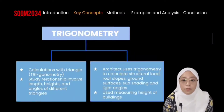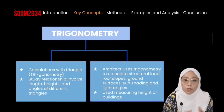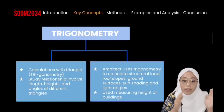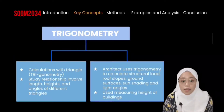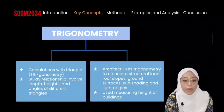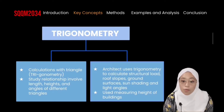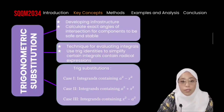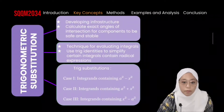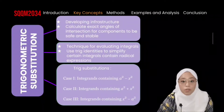Next, we have trigonometry, which is basically a calculation involving triangles — 'tri' meaning triangle. It studies the relationships involving length, height, and angles of different triangles. Architects use trigonometry to calculate structural load, roof slope, ground surface, sun shading, light angles, and many more. Next, we have trigonometric substitution, which is used in developing infrastructure and calculating the exact angles of intersection for components to be safe and stable. It is a technique of evaluating integrals using trigonometric identities to simplify certain integrals containing radical expressions.